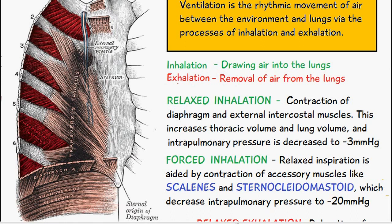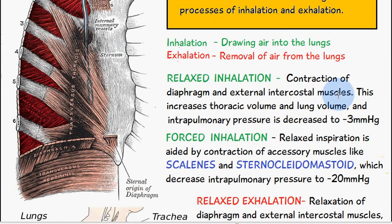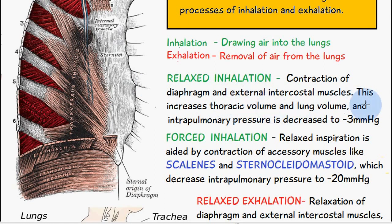There are two types of inhalation: relaxed inhalation and forced inhalation. For relaxed inhalation, we have contraction of the diaphragm and contraction of the external intercostal muscles. The effect is an increase in thoracic volume and lung volume, and the intrapulmonary pressure decreases to minus three millimeters of mercury.